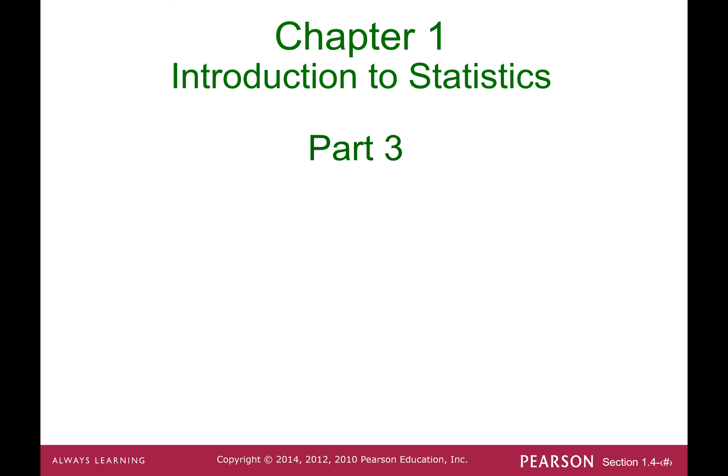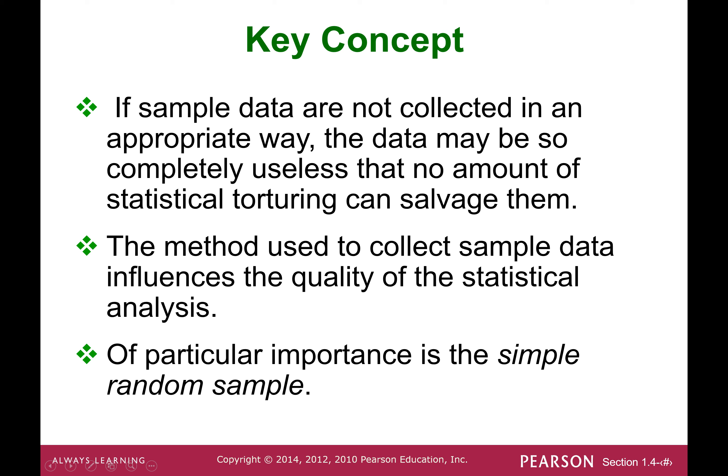In Chapter 1, Introduction to Statistics, let's explain some important terms. If the sample data is not collected in a proper way, meaning you do not pick a simple random sample and you collect the data in an inappropriate way, then the data may not be useful at all. You cannot use data coming from a sampling method which is not a proper method. The quality of the sample data is crucial to have a successful statistical analysis and come up with a proper conclusion.